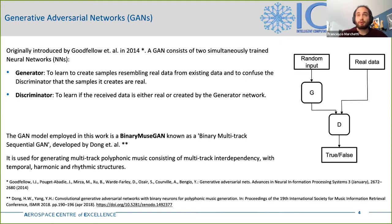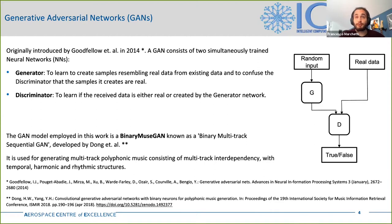Originally introduced by Goodfellow and others in 2014, GANs consist of two simultaneously trained neural networks: a generator and a discriminator. The generator learns how to create samples which resemble real data, starting from random numbers, and the discriminator learns how to understand which data it receives as input are real and which aren't. During the training process, the output from the discriminator teaches the generator how to produce better fake data, while the discriminator learns progressively how to spot the fake data.